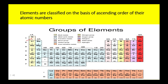For example, the first element is hydrogen with atomic number 1, then helium 2, lithium 3, beryllium 4, boron 5, carbon 6, nitrogen 7, oxygen 8, fluorine 9, neon 10, sodium 11, magnesium 12, aluminium 13, and so on. All these elements are classified on the basis of the ascending order of their atomic numbers.